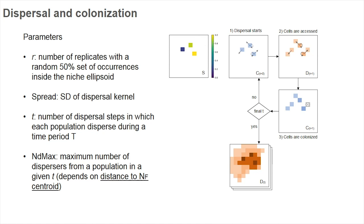This simulation is an interplay between dispersal and colonization, and there are parameters that users can define. For example, the number of replicates, the standard deviation of the dispersal kernel — the mean of the kernel is set to zero by default, which means dispersers usually don't travel far from their source cell and typically disperse to neighboring cells. Users can also define the number of dispersal steps for each replicate, and an important parameter is the maximum number of dispersals per dispersal event, which is tied to the assumption about distance to the niche centroid.